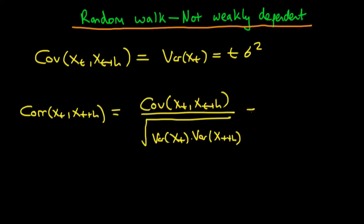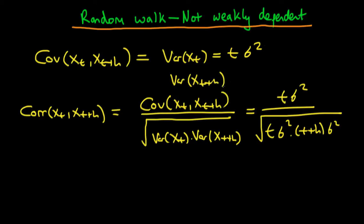If we substitute in for each of these things, we have that the numerator is just t times sigma squared, and then the denominator becomes t times sigma squared times t plus h sigma squared, because for the variance of xt plus h we're basically just increasing t to t plus h.